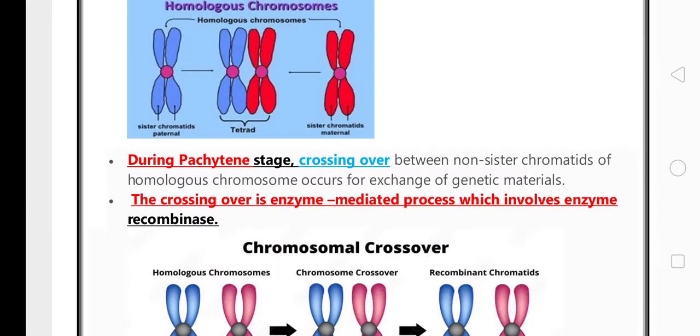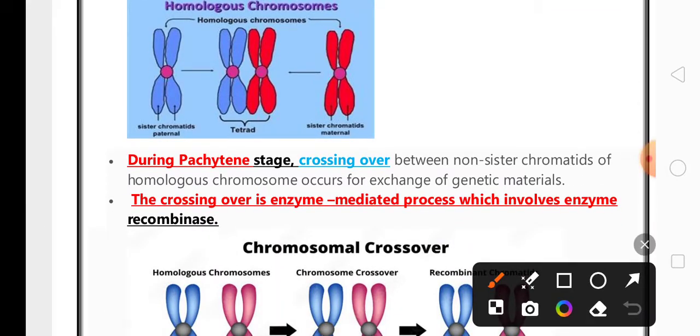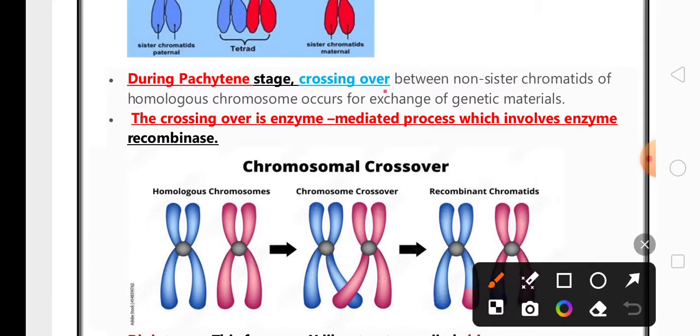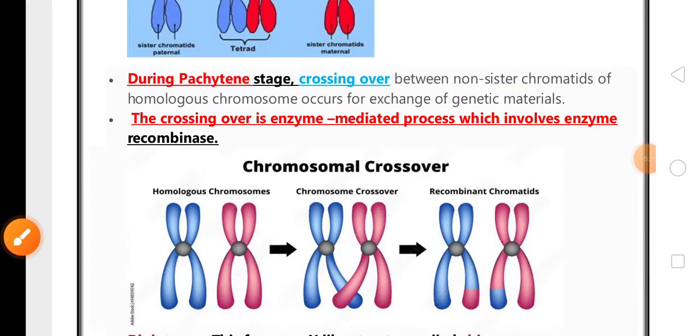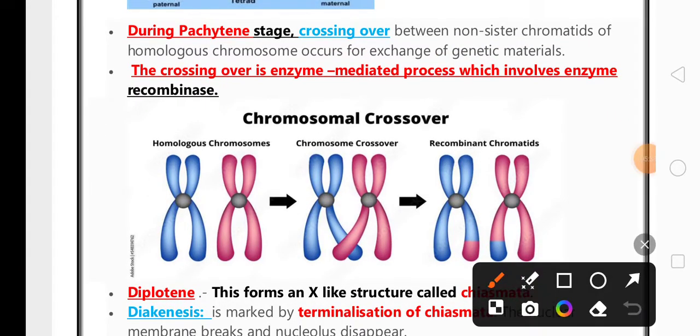During pachytene stage, crossing-over occurs between two non-sister chromatids. Crossing-over takes place which helps in the exchange of genetic material. For crossing-over, there is one important enzyme that plays a very important role called recombinase. Recombinase enzyme is helpful in the crossing-over of non-sister chromatids.